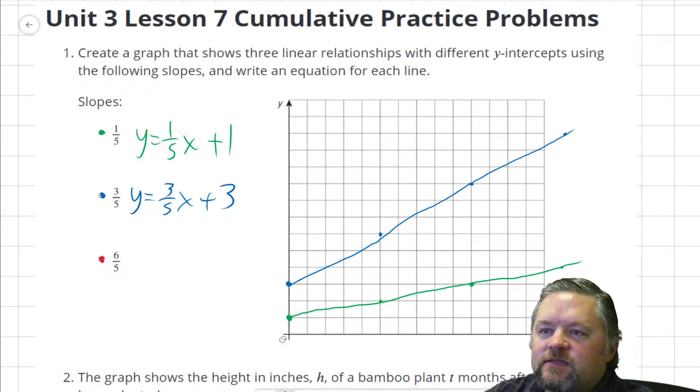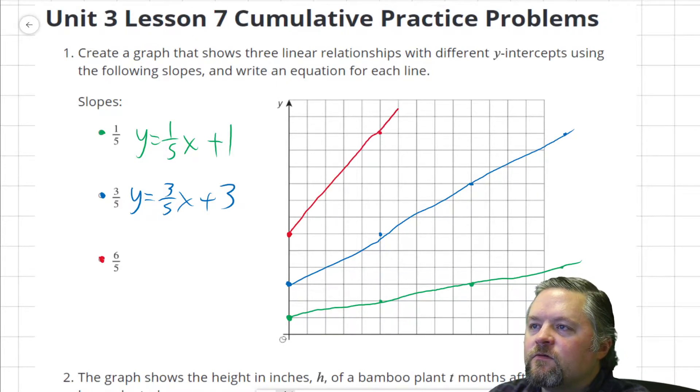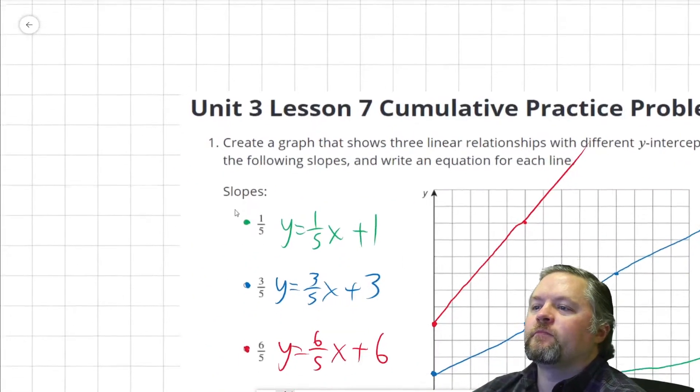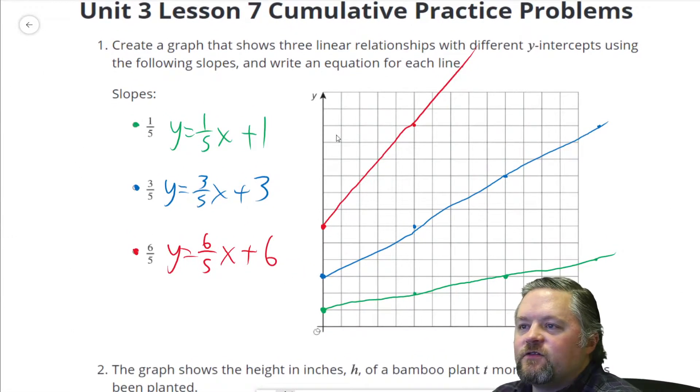One more of these. Next one says six-fifths. I'll start it here, rise of six: one, two, three, four, five, six, run of five. Y equals six fifths x plus what's our y-intercept: one, two, three, four, five, six. Okay, your answer didn't have to match these exactly. You could have started them in different places, but changing the starting location should only change the y-intercept of those equations.